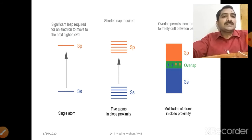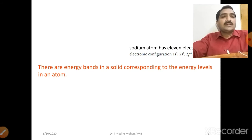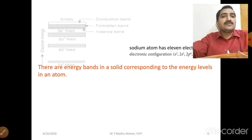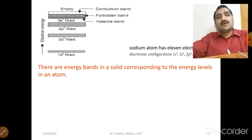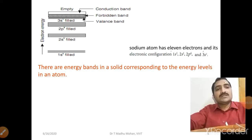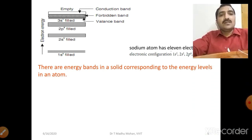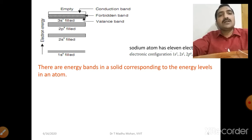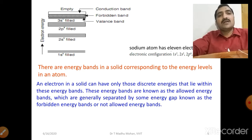There are energy bands in a solid corresponding to the energy levels in an atom. Using sodium (1s², 2s², 2p⁶, 3s¹) as an example: the 1s, 2s, and 2p bands are completely filled, but the 3s band is only half-filled since each sodium atom contributes only one electron. The half-filled band containing electrons is called the valence band; the remaining half-filled portion is the conduction band; and the energy difference between the conduction band and valence band is called the forbidden band.